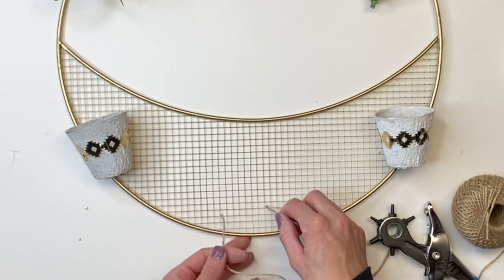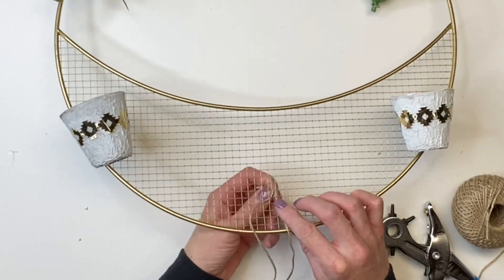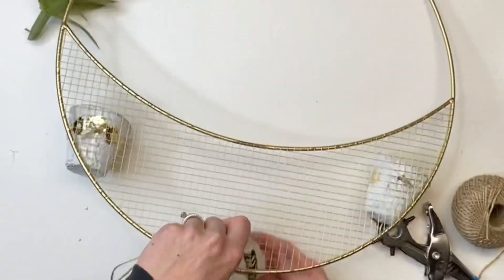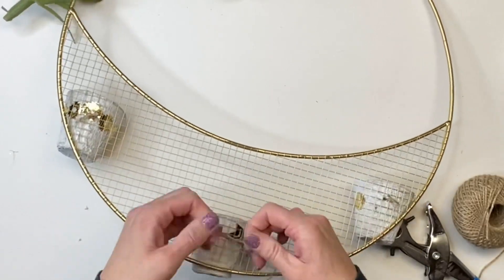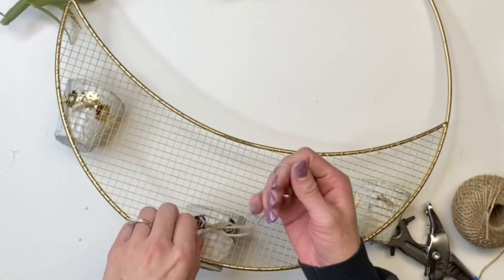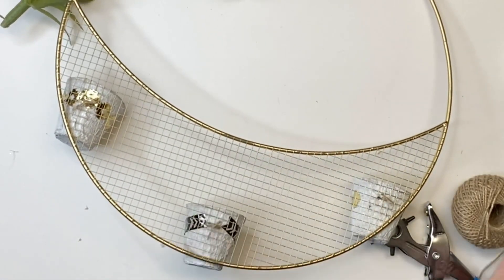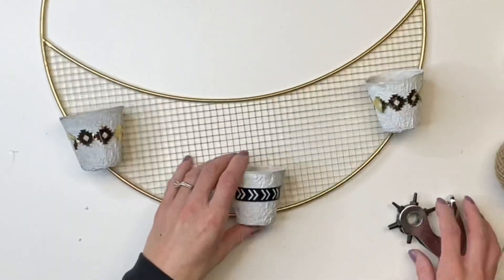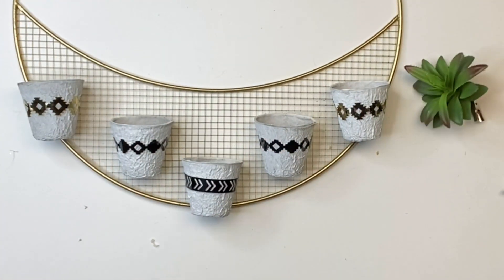So once I had this one in place, I took the other two and then put them in between where you have the two gaps. And I filled the entire grid with five of them.